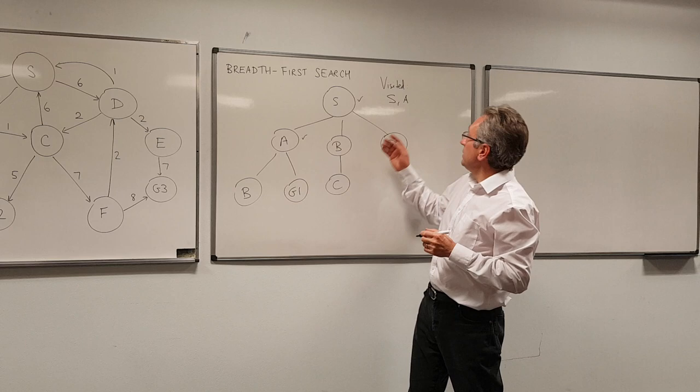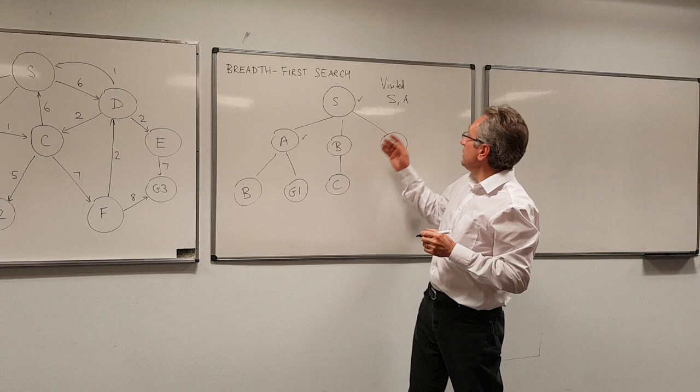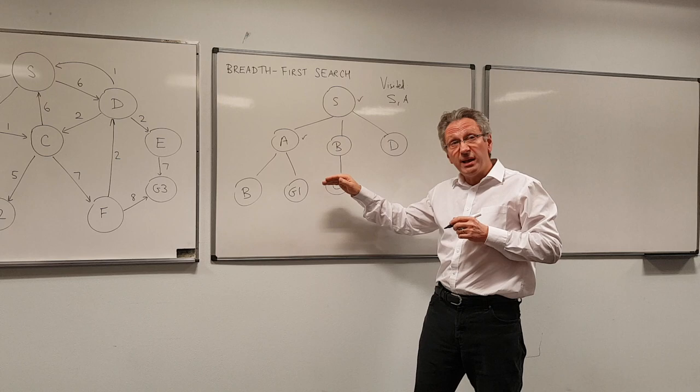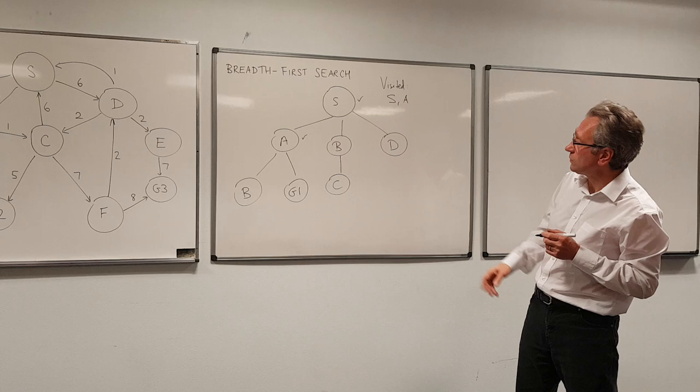The reason being is that if it's on the visited list, then it's already in the tree at the same depth or something that's higher up. So there's no point in adding it again. So now we add B to the visited list.